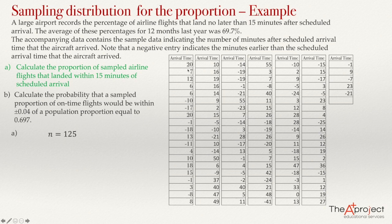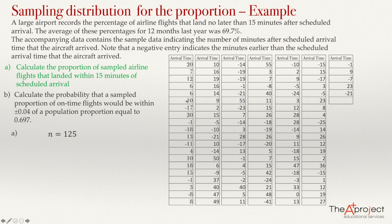From these times I need to check which are within 15 minutes of the arrival time. For example, a value of 20 means the flight arrived 20 minutes late. A negative 10 means the flight arrived 10 minutes early. The value 20 is not within 15 minutes, but negative 10 is within 15 minutes, while negative 17 is not. So it ranges from 15 minutes late to 15 minutes early. The sample proportion p̄ equals x divided by n, where x is the number of flights arriving within 15 minutes.